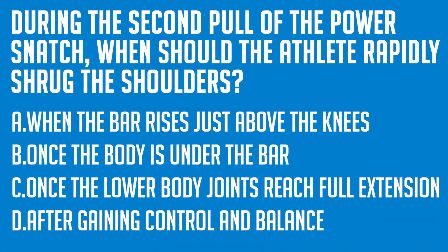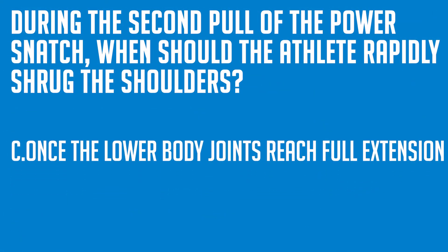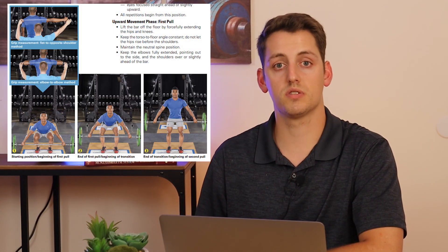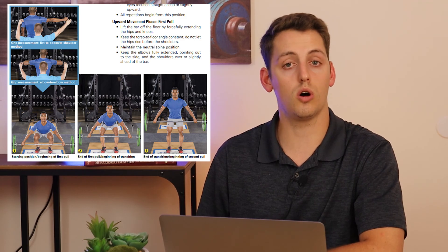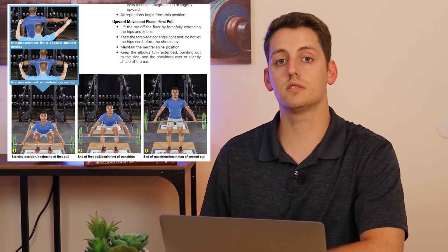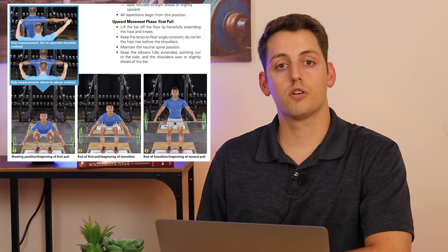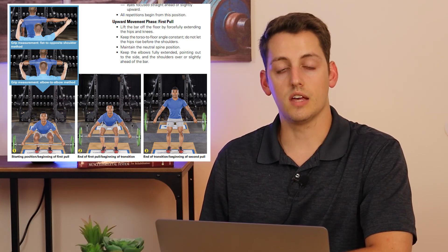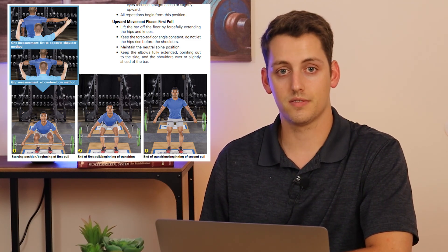For this question, you need to memorize each phase of the power snatch as taught by the NSCA. The correct answer in this case is C, once the lower body joint reaches full extension, the athlete rapidly shrugs the shoulders, with the elbows fully extended and still out to the sides. Note that any Olympic lifts could be presented to you on the exam including the log clean and press, power cleans, and tire flips. Be sure you're familiar with each Olympic lift as well as every phase within that lift.